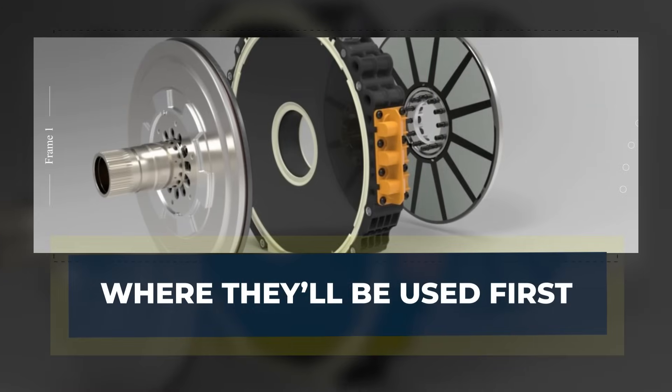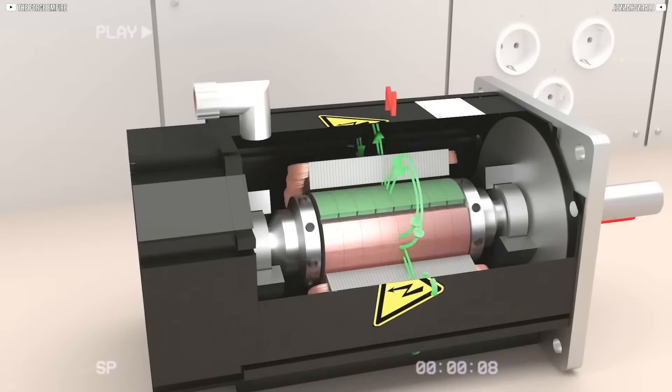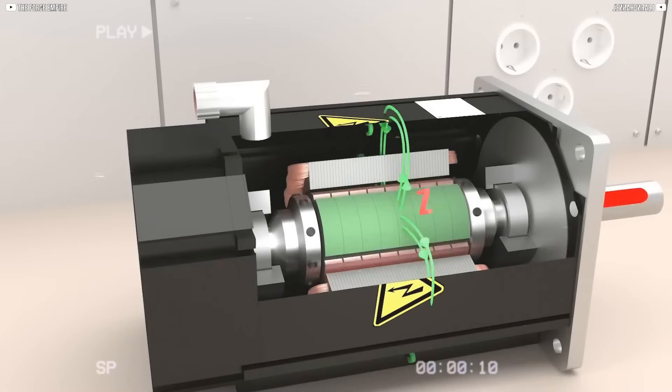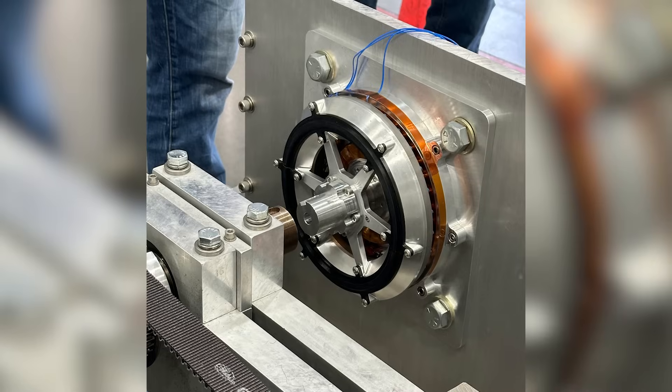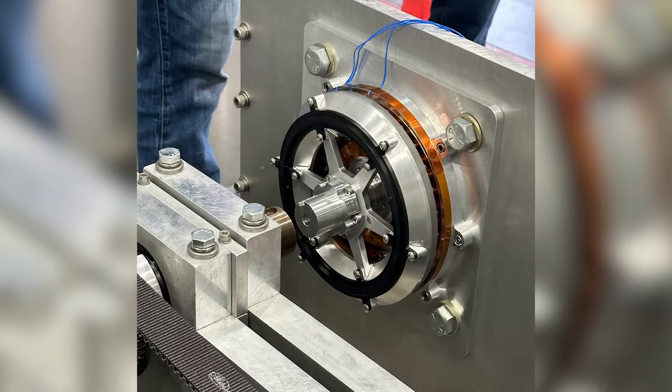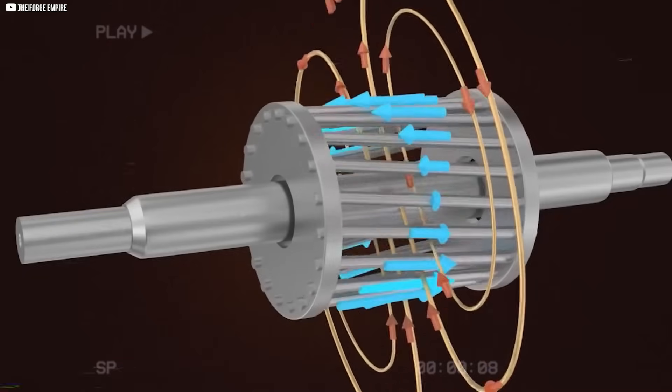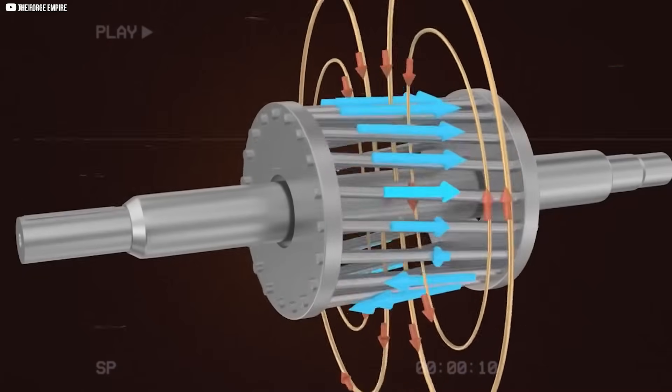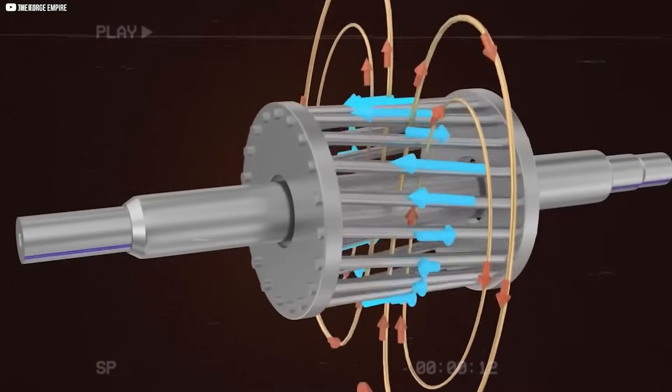Where they'll be used first. Electrostatic motors may not appear in cars or planes anytime soon, but their path into industry is already visible. The first real impact will likely come in places where energy use is massive and steady.